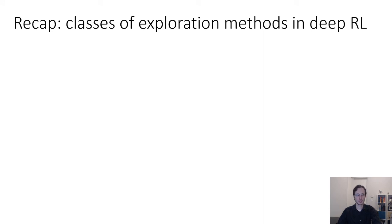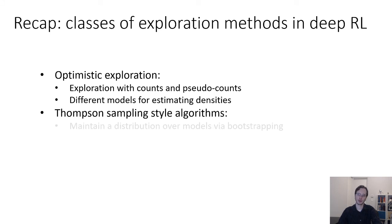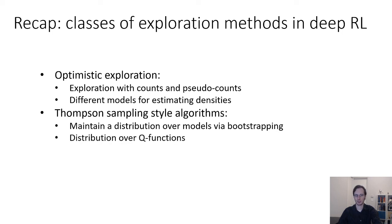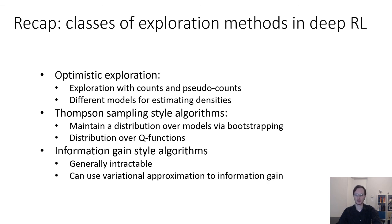To recap, we discussed different classes of exploration methods in deep RL: optimistic exploration like exploration with counts and pseudocounts, different models for estimating densities; Thompson sampling style algorithms where you maintain a distribution over models via bootstrapping — for example, maintaining a distribution over Q functions and sampling a different Q function for every episode; and information gain style algorithms, which are generally intractable, but you can use variational approximations to information gain to get practical algorithms.